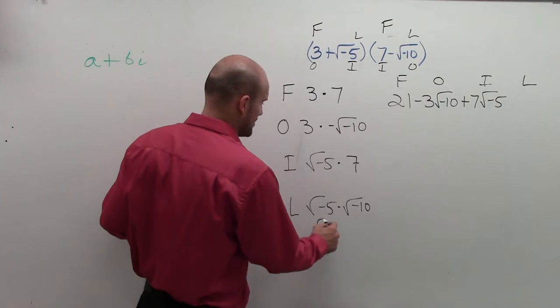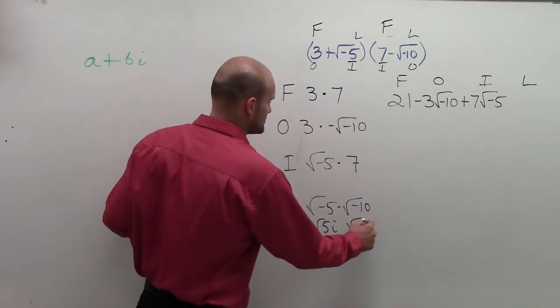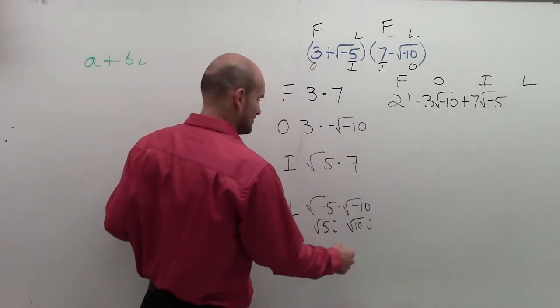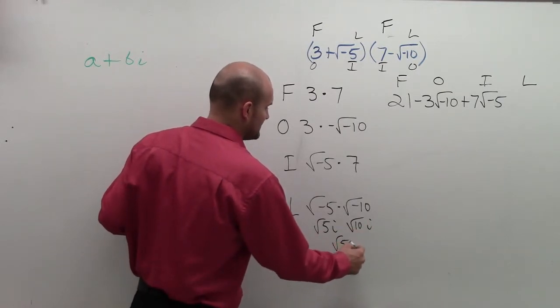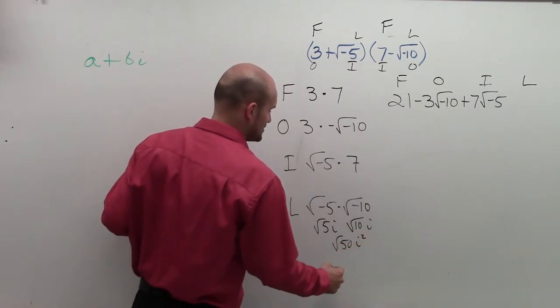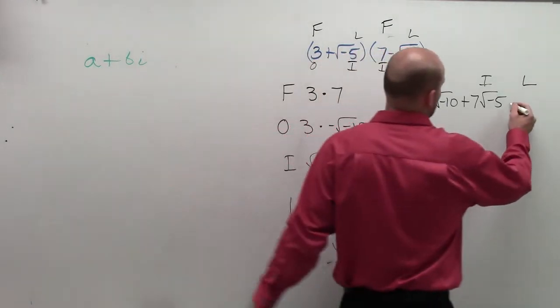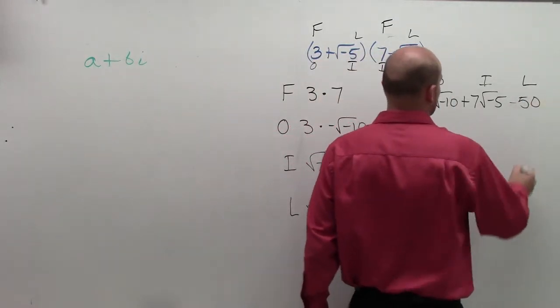we can represent this as square root of 5i times square root of 10i. So you can pull out the i. Therefore, we have square root of 50 times i squared, which is negative square root of 50. So that's minus square root of 50.